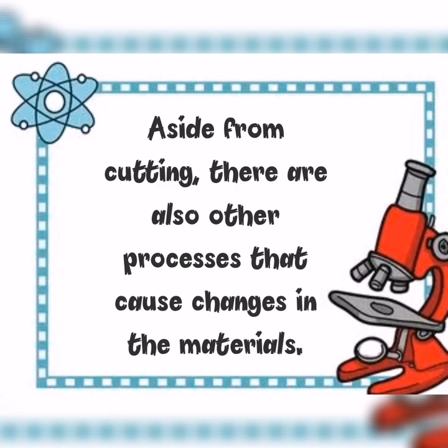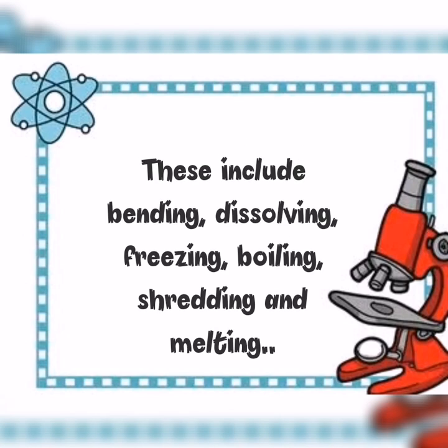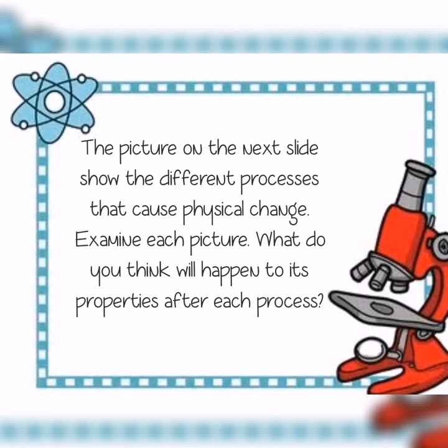Aside from cutting, there are also other processes that cause changes in the materials. These include bending, dissolving, freezing, boiling, shredding, and melting. The breaking of glass into pieces is also an example of physical change. Change in the state of matter from solid to liquid or from liquid to gas is also an example. The pictures on the next slide show the different processes that cause physical change — examine the pictures and think about what will happen to their properties after each process.